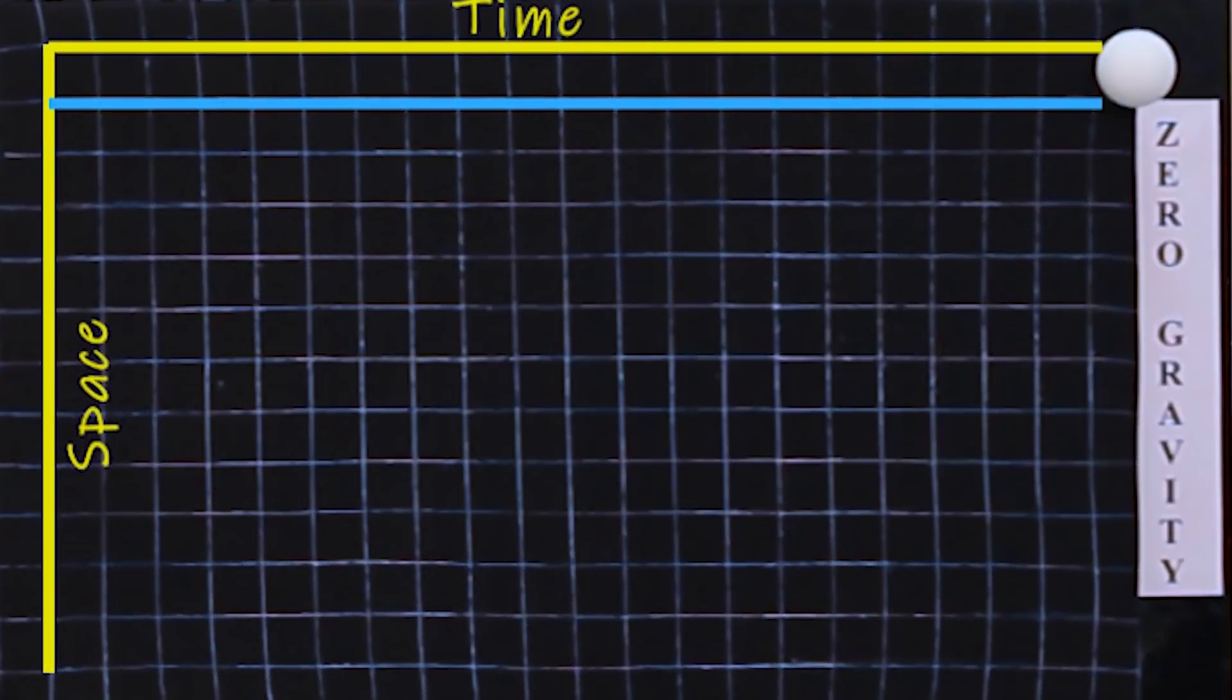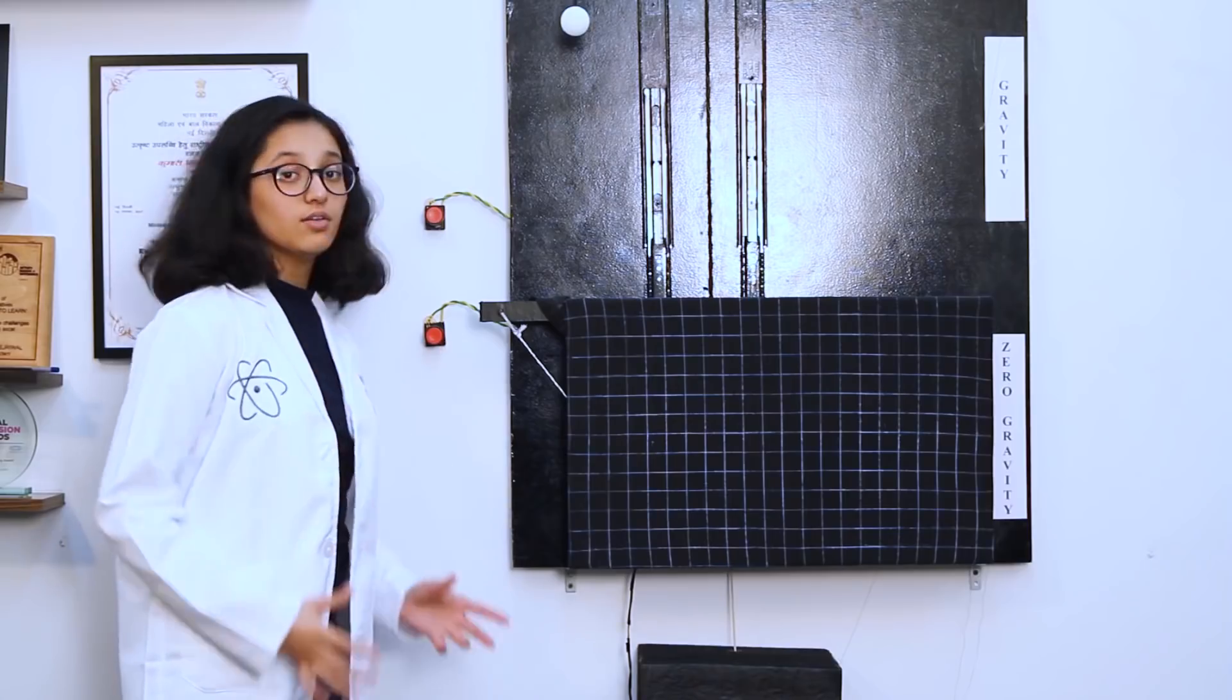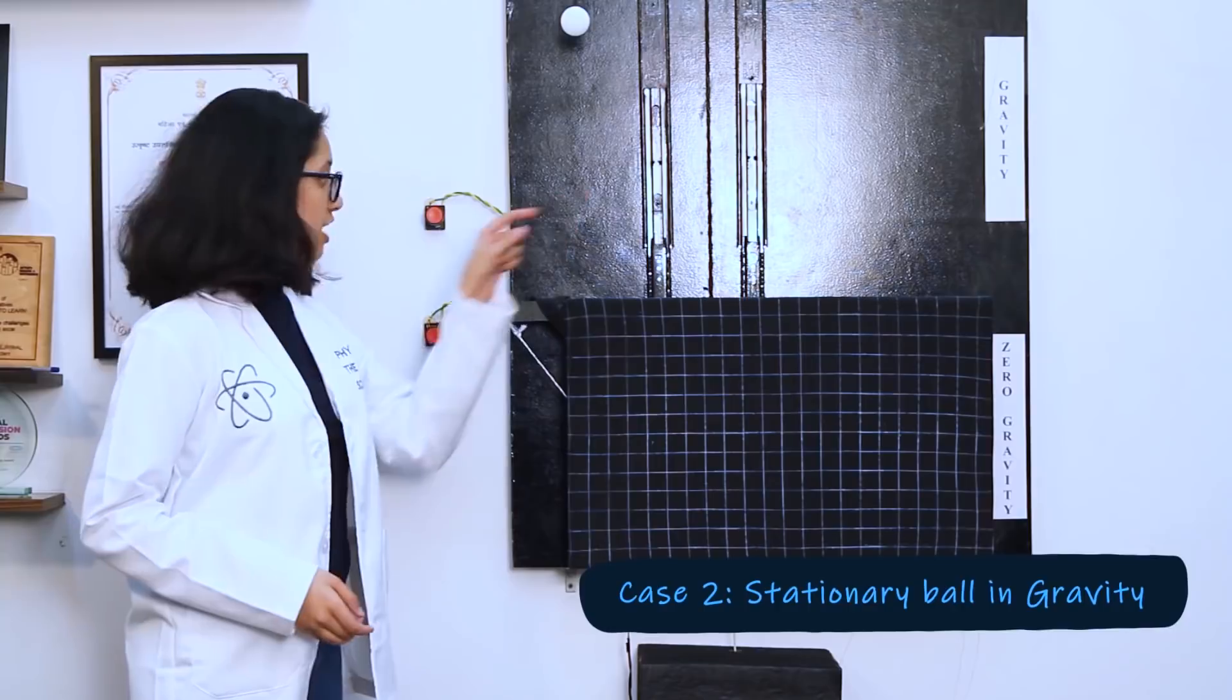And this is how the ball's world line would look on a space-time graph. Now, let's imagine the same scenario in gravity.